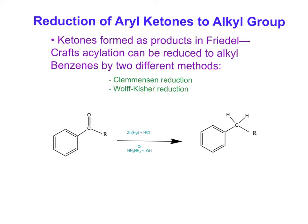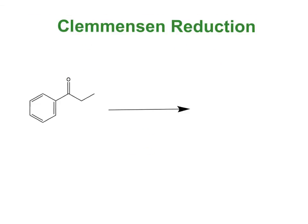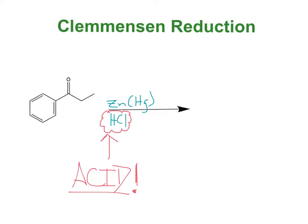Furthermore, these reductions are really good for synthesis problems. The Clemmensen reduction uses zinc and mercury in the presence of a strong acid, which would be hydrochloric acid. Our end product would be this.